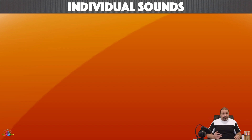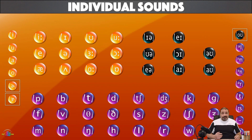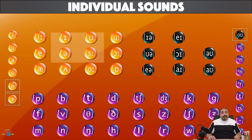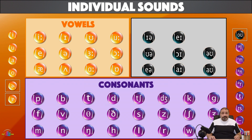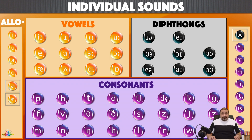Excellent. So now you know why we need the English individual sounds and why they are so important in English pronunciation. There are 44 sounds in the English language. They can be divided into three main groups: number one, the vowel sounds; number two, the consonant sounds; and number three, the diphthong sounds. However, there is a fourth group that we are going to study in this program, and they are the alloforms. In order to improve your English pronunciation, you have to learn how to produce all these sounds correctly.